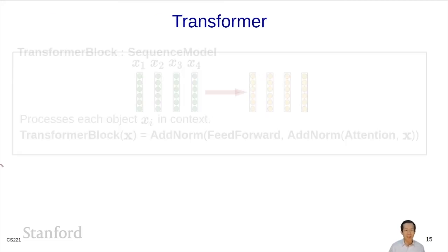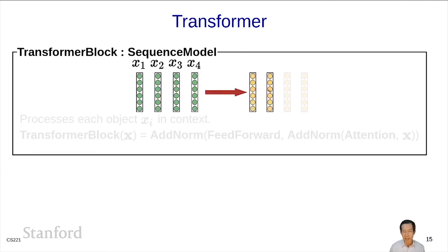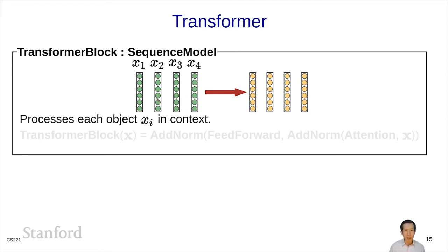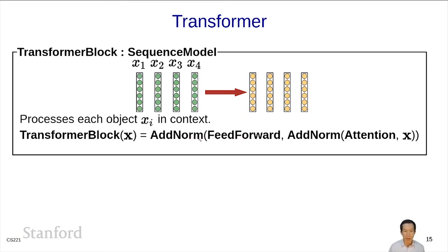Now I'm finally ready to define the transformer block. This is again a sequence model that takes a sequence of input vectors and produces a contextualized set of output vectors, intuitively processing each xi in context. In one line: take x, apply attention to allow all vectors to talk to each other, normalize to do this safely using add norm, then apply feedforward to each individual resulting vector independently, and normalize again with add norm. That's it for a transformer block.